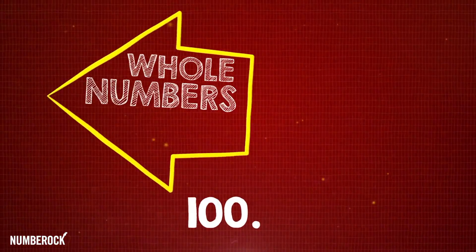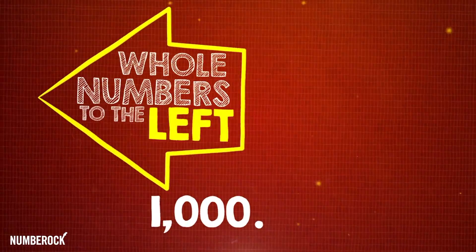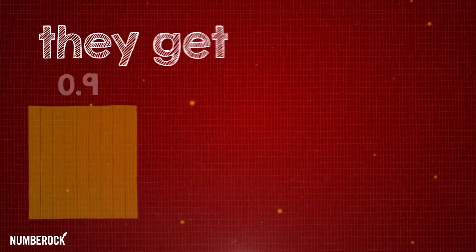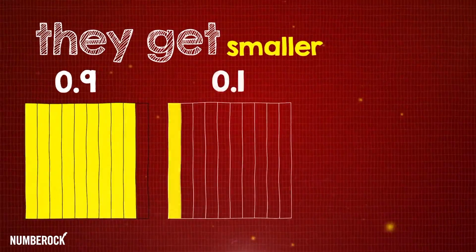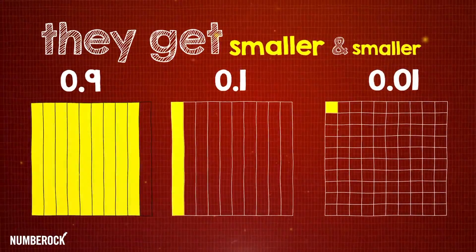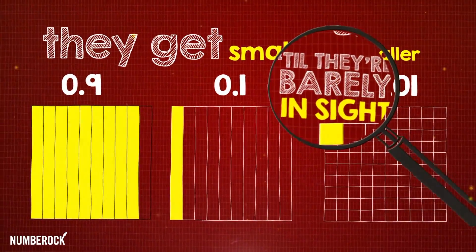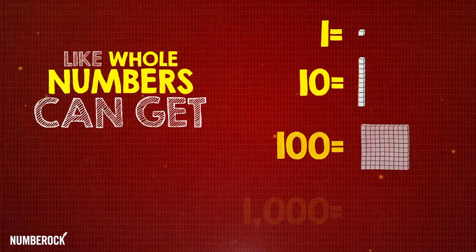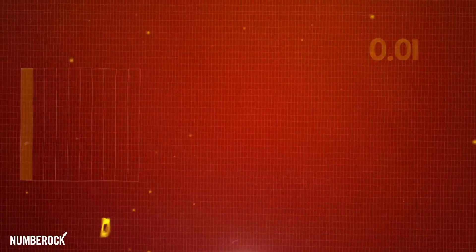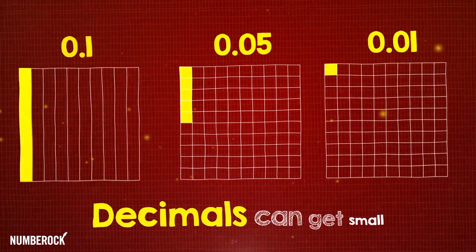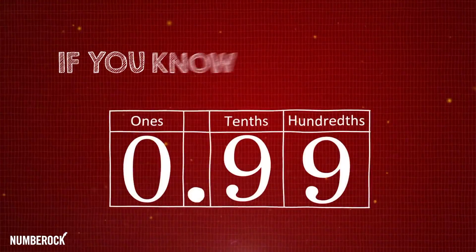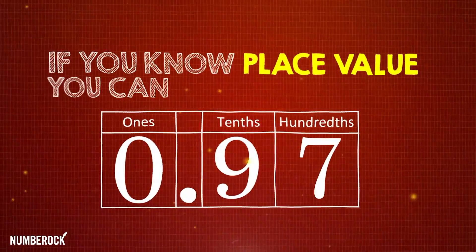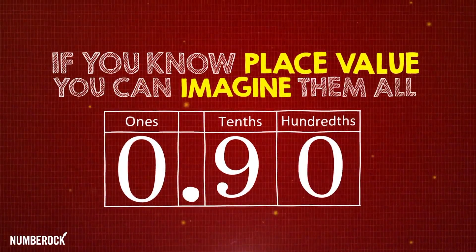Whole numbers to the left, decimals to the right — they get smaller and smaller till they're barely inside. Like whole numbers can get big, decimals can get small; if you know place value, you can imagine them all.